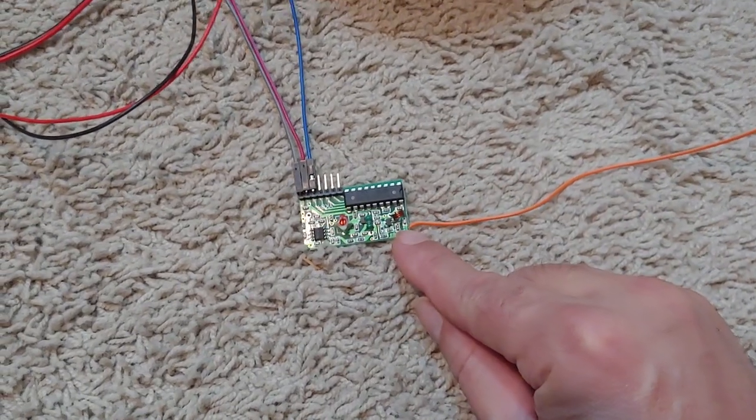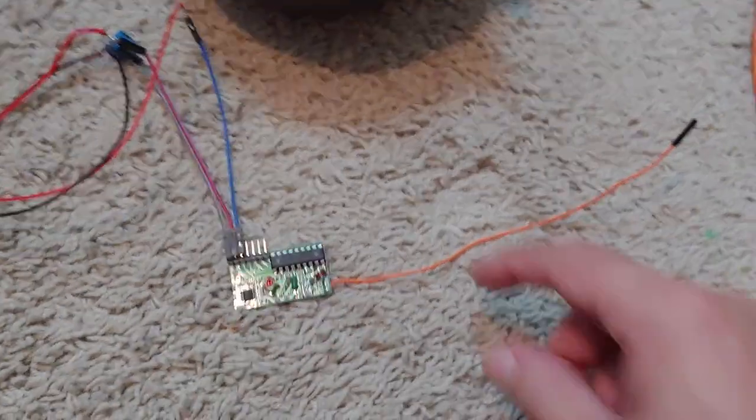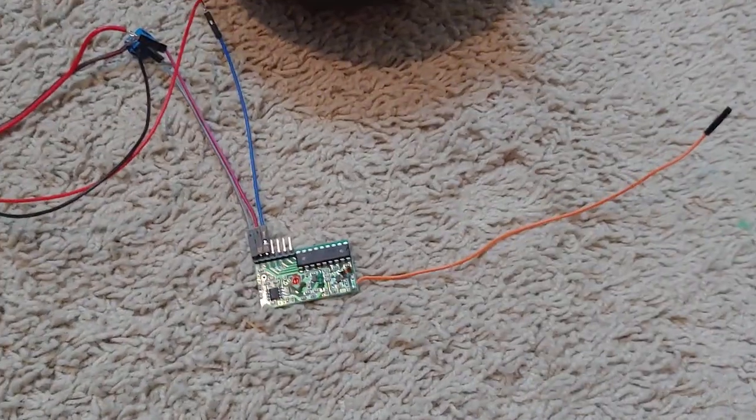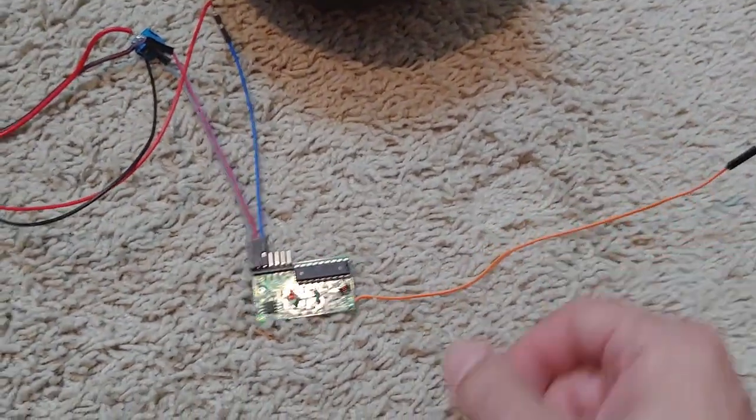And then you just got to wire up, solder up a piece of wire onto the antenna hole there so that it can receive. I'm not sure what the specs are on exactly how long that's supposed to be but I just use an old jumper wire and it works fine.